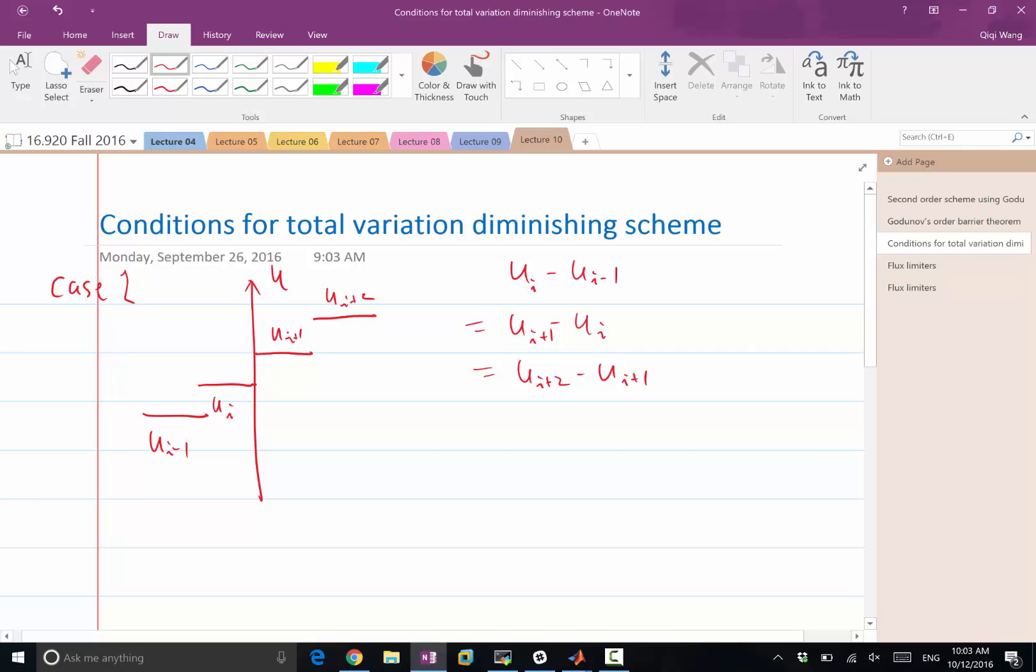In this case, second order accuracy means that when we perform a reconstruction of the solution, if we reconstruct the solution of a linear equation, to get second order accuracy, we need an exact reconstruction.